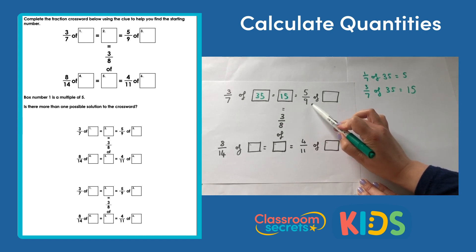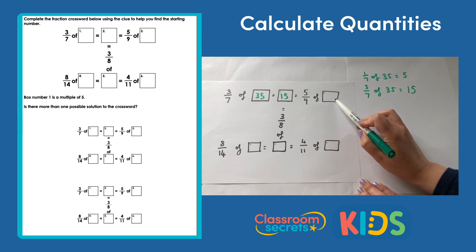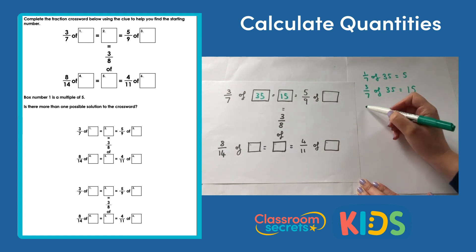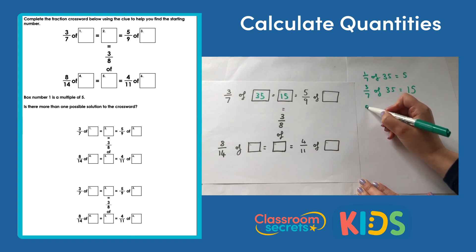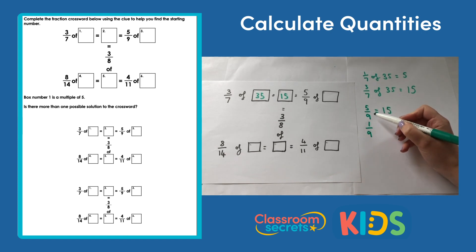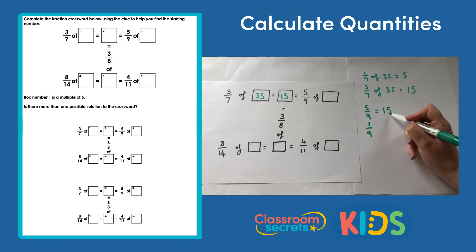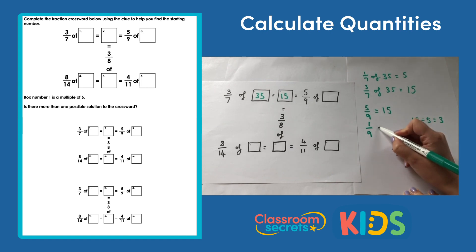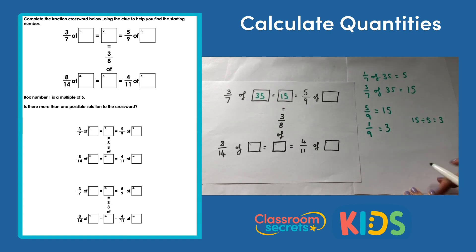Now we have 15 equals five ninths of something, so we need to find the whole amount. We know five ninths equals 15, so we want to work out the unit fraction first — what one ninth is. Since five of those equal 15, we divide 15 by five to find one ninth.